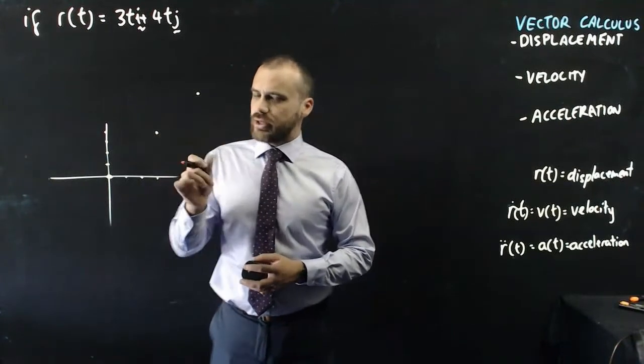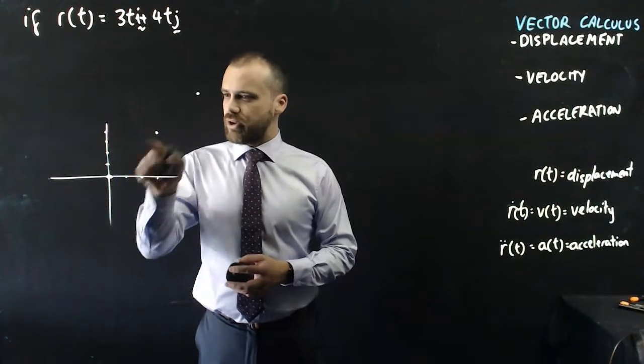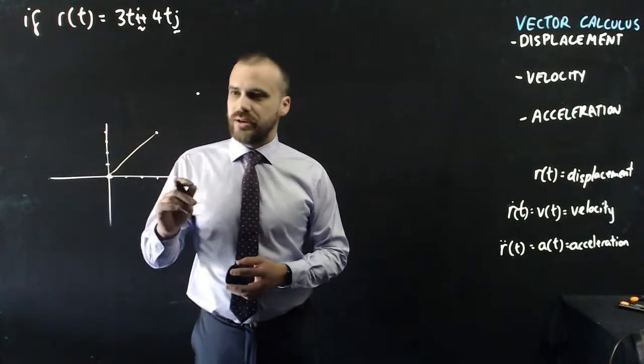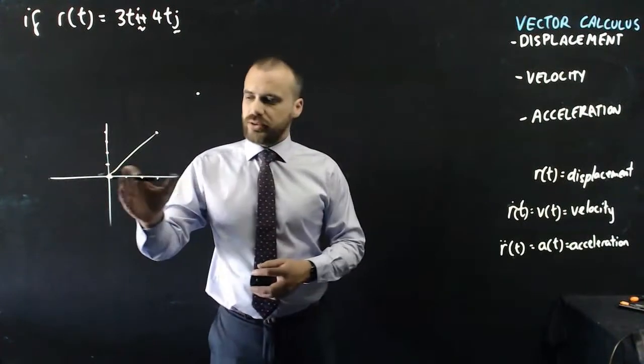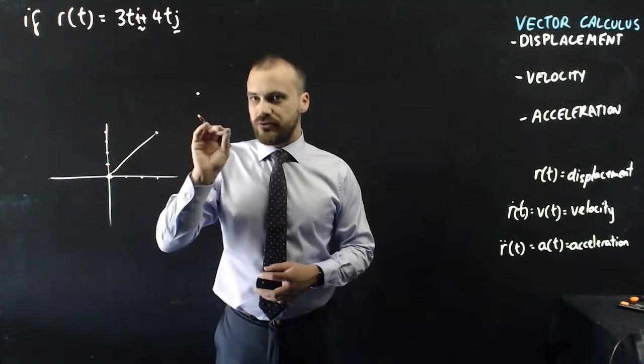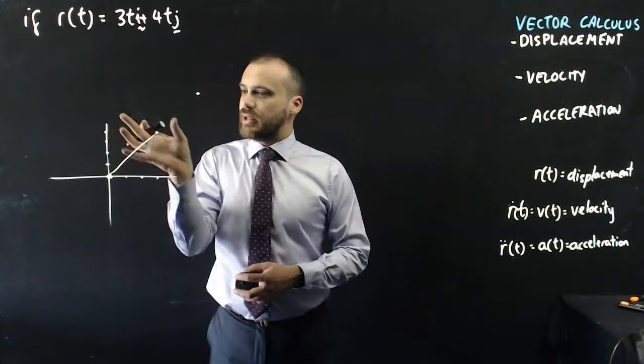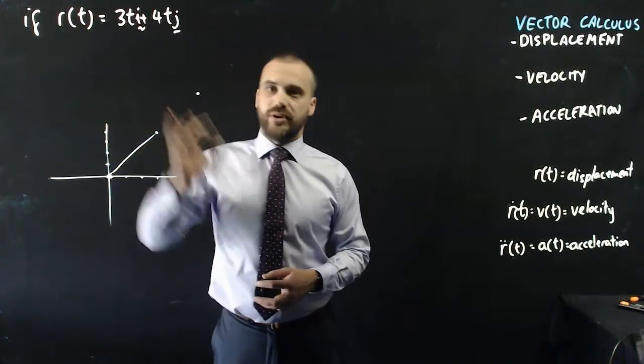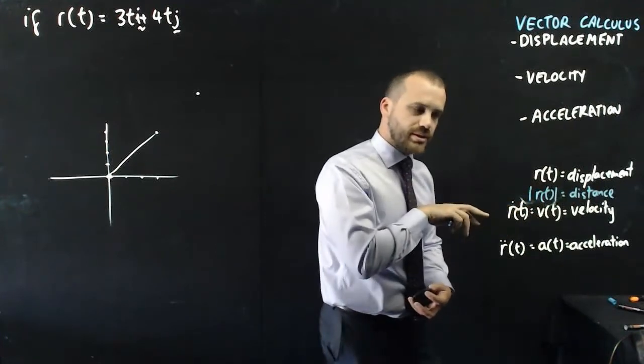Now, you should notice that you can see the distance from the origin by finding that length there, which is just the magnitude of that vector. So, displacement is one thing, it's giving us i and j components, but we can also find the distance by finding the magnitude of our vector.